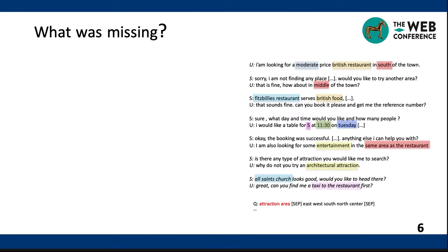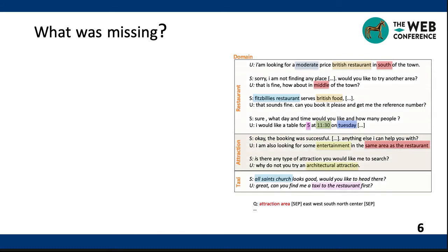So, what is missing? Let's look at an example dialogue. The user first says, 'I'm looking for a moderate-price British restaurant in the south of the town.' The system replies that it cannot find any place and asks if the user would like to try another area. The user says, 'That's fine. How about in the middle of the town?' The system recommends a restaurant serving British food. The user asks to book it with a reference number. The system asks about the day, time, and number of people, then books the place. The user then says, 'I'm also looking for some entertainment in the same area as the restaurant.' So we see the domain actually changes during the process of the dialogue.